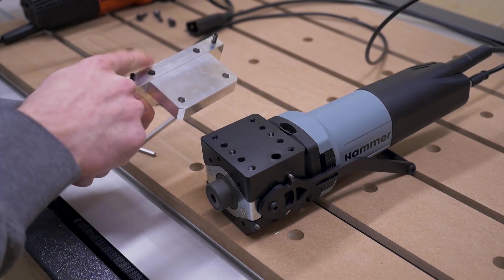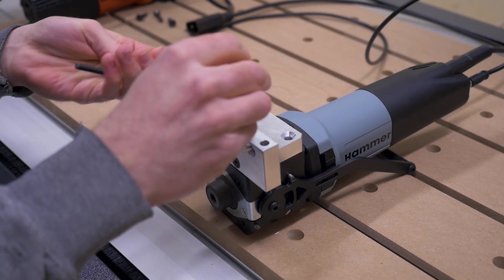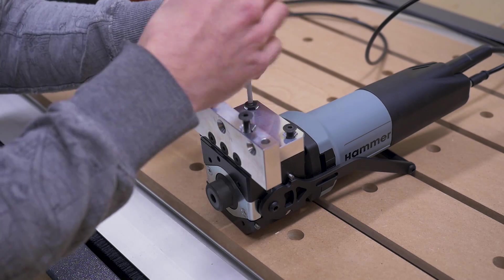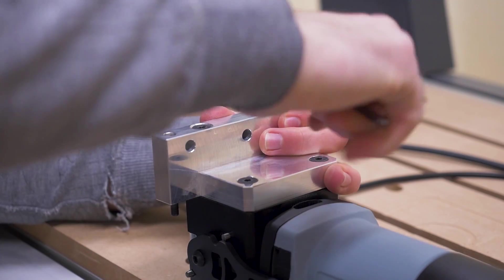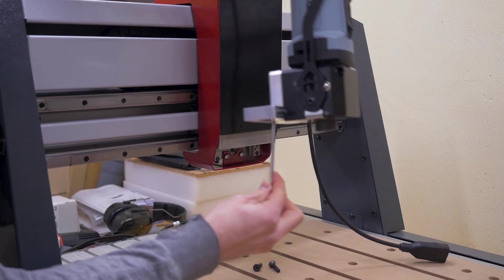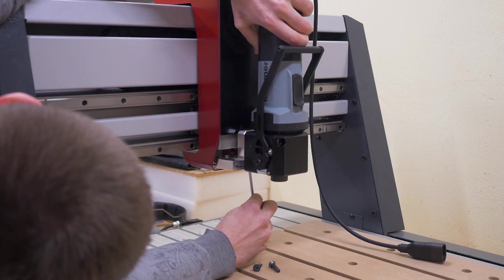To install this on the machine there's this mounting bracket with four screws and together with this bracket it gets screwed to the z-axis.